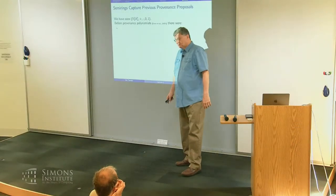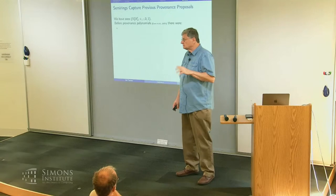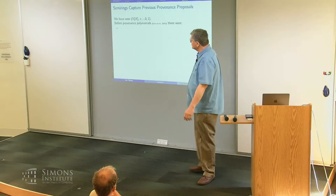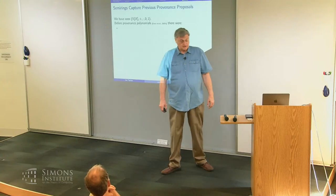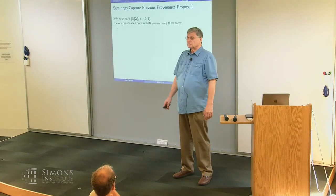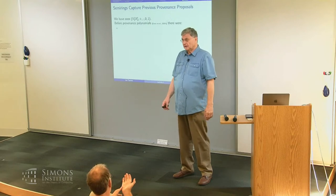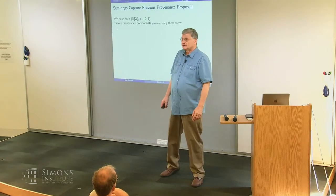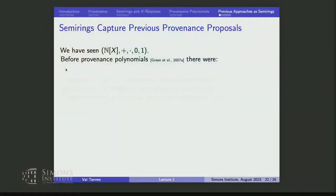I gave you the central tenet of the semiring framework approach. A nice thing that happened when we developed this was that it allowed us to make some sense of competing proposals for what provenance should be, whether it was called lineage or pedigree or whatever. It wasn't clear how they all should be compared. There was some intuitive understanding that some proposals for provenance were expressive and some were less expressive.